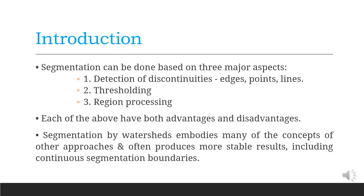Segmentation can be done based on three major aspects: detection of discontinuities — that means edges, points and lines — thresholding, and region processing. Each of the above have both advantages and disadvantages. Segmentation by watershed embodies many of the concepts of other approaches and often produces more stable results including continuous segmentation boundaries. This approach also provides a simple framework for incorporating knowledge-based constraints in the segmentation process.